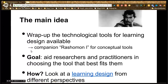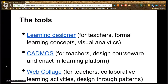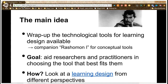In the Learning Design Rashomon II paper, similar to what Helen described for Rashomon I — which looked at conceptual tools — we wanted to do the same for technological tools being developed to support learning designers. Our main goal was to aid researchers and practitioners in choosing the tools that best fit their goals, since it's quite difficult to keep up with the different tools produced by different research teams. We wanted to give a wide overview — different approaches, different levels of granularity.